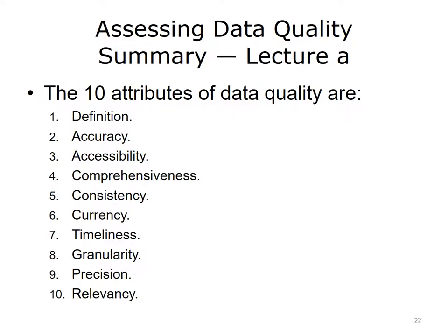In summary, data used for research purposes is collected under different conditions than that used for quality improvement. Poor quality data contributes to error. The ten attributes of data quality are: Definition, Accuracy, Accessibility, Comprehensiveness, Consistency, Currency, Timeliness, Granularity, Precision, and Relevancy.